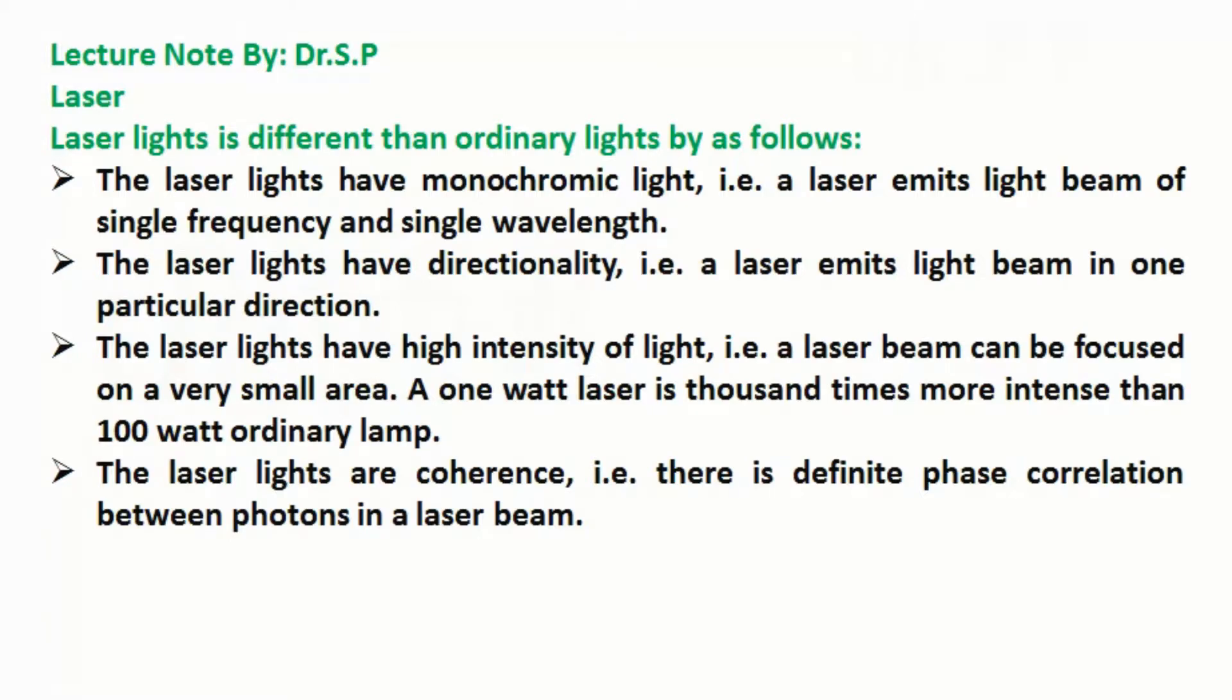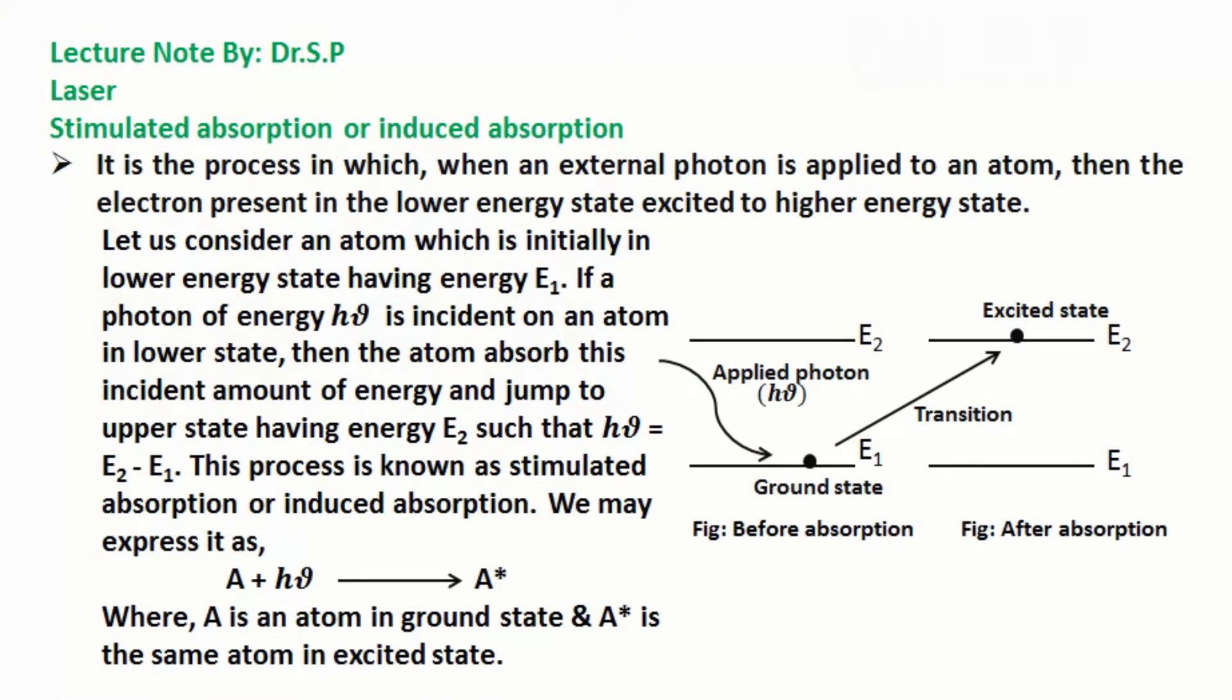The laser lights have high intensity of light, that means a laser beam can be focused on a very small area. A 1 watt laser is thousand times more intense than 100 watt ordinary lamp. The laser lights are coherence, that means there is definite phase correlation between photons in a laser beam.